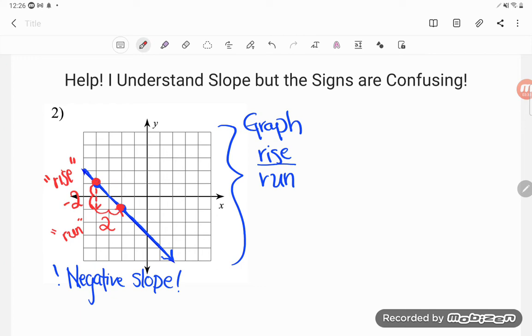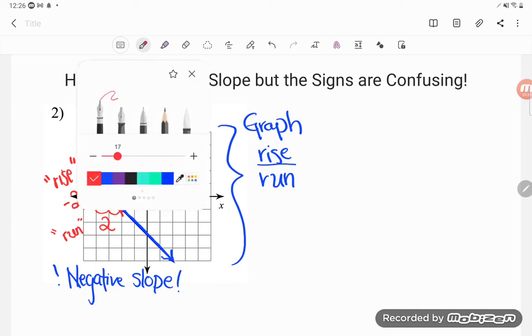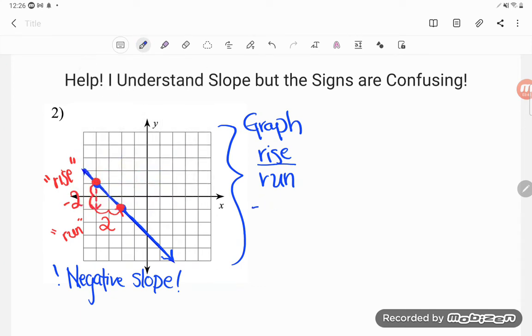Let's put that into our rise over run shortcut. Our rise was negative two and our run is two. Now, no matter if you're looking at a slope problem or another kind of fraction problem, a probability problem, unless otherwise indicated we want our final answer to be simplified. And this fraction simplifies.